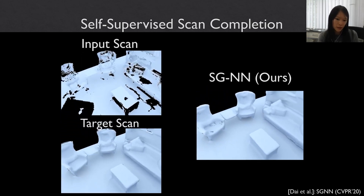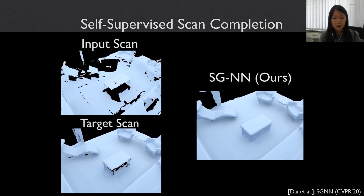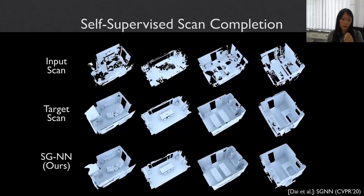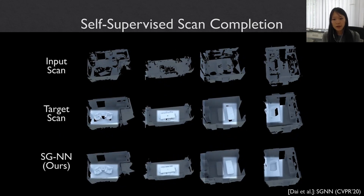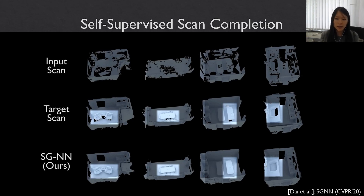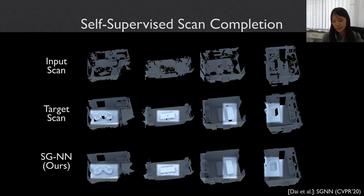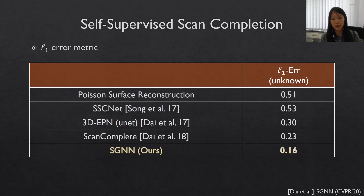Here you can see an example of an incomplete scan where we predict the geometry, and in comparison to the corresponding target scan, we are actually able to estimate geometry in commonly occluded regions. You can see a similar pattern across these scans — this loss formulation allows us to generalize across various partial observations of objects and learn to generate geometry in regions that are commonly unobserved in a real world scanning scenario, letting us generalize across the whole dataset to predict something potentially more complete than any single scan in the training database.